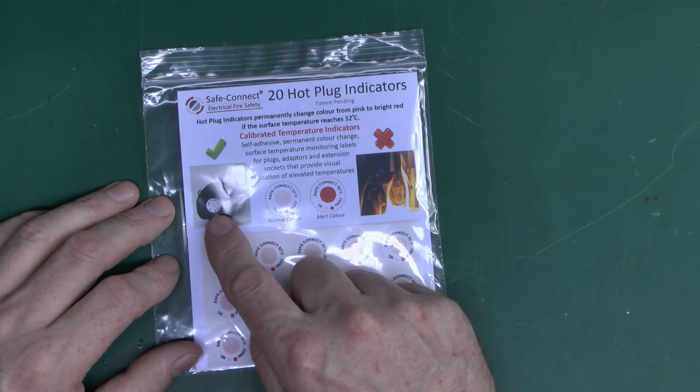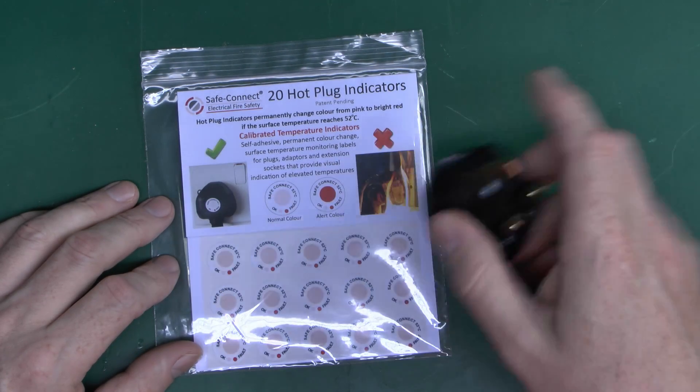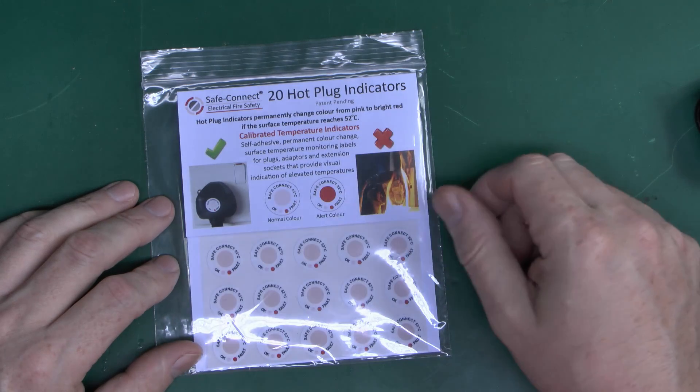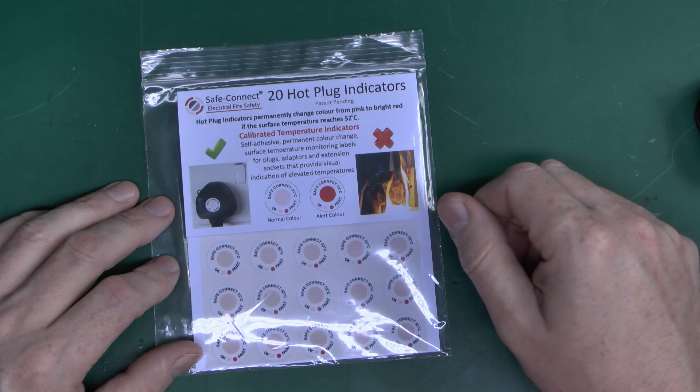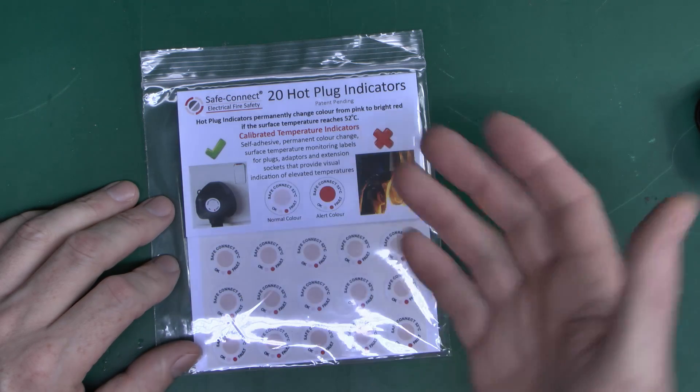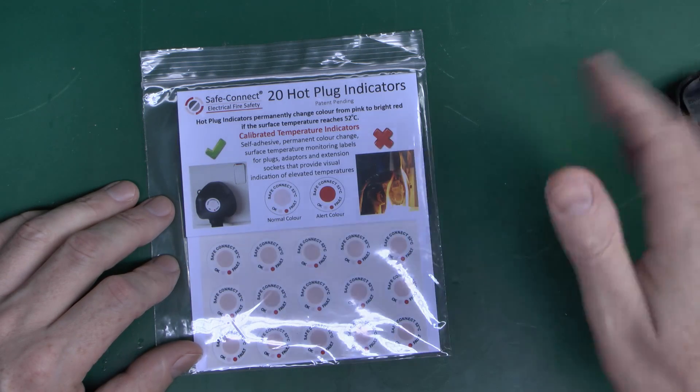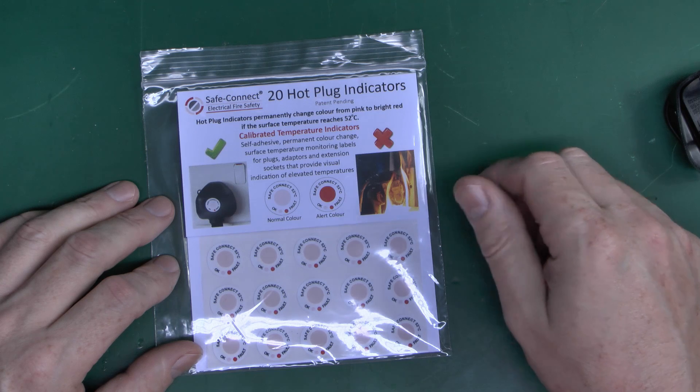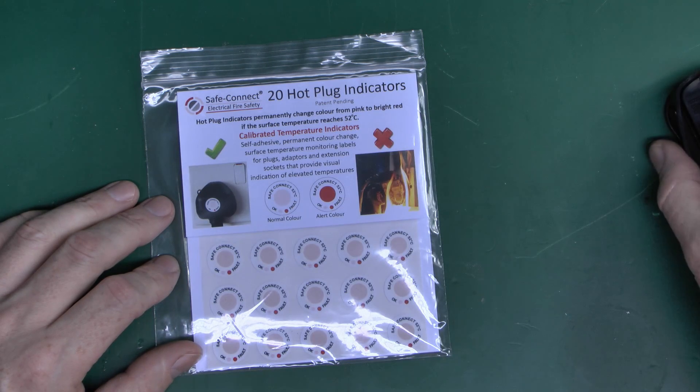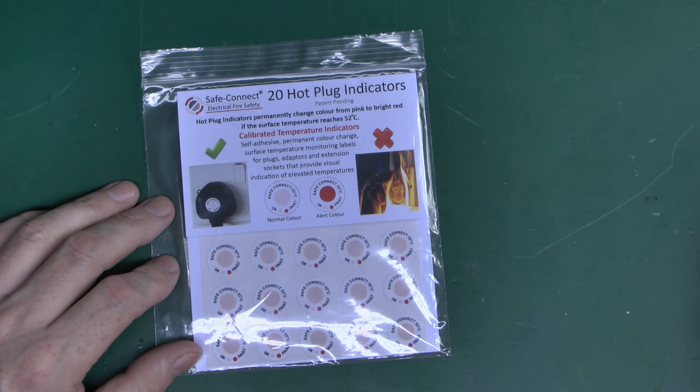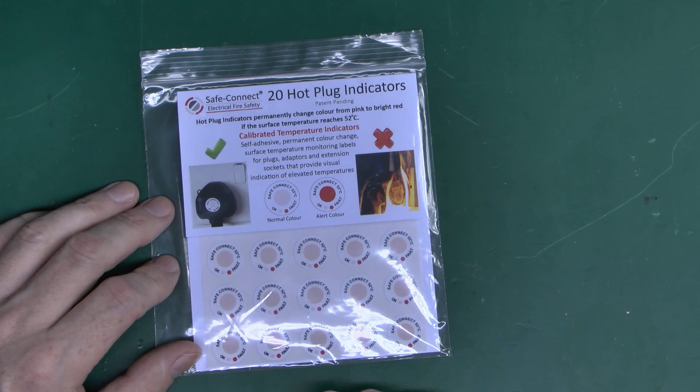The idea of these is that you stick them on the back of a plug. If the plug should overheat due to a faulty connection or whatever inside, then it will obviously show that that has occurred. You don't have to be there at the time it's got hot, because if something overheated and then the appliance was turned off later, it might not be obvious that the overheating had occurred. So it's kind of a permanent indication there to suggest that something is wrong.